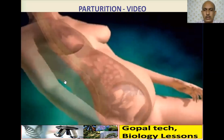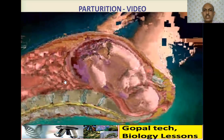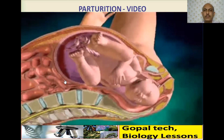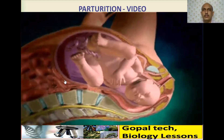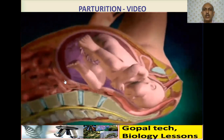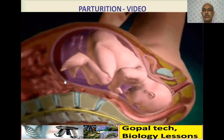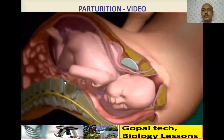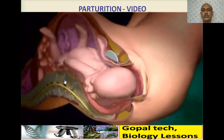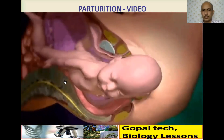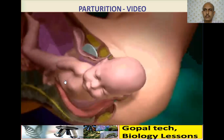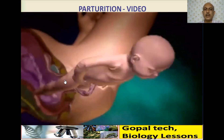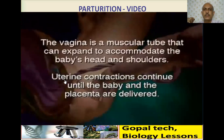During pregnancy, the uterus nurtures and protects the developing fetus during gestation. A full-term pregnancy is approximately 40 weeks. When the fetus has matured and birth is imminent, the baby goes through movements to navigate the birth canal. During labor, the uterus contracts at regular intervals, causing the cervix to dilate — these are labor pains. When the cervix dilates to 10 centimeters, the baby passes from the uterus into the vagina, a muscular tube that expands to accommodate the baby. Contractions continue until the baby and placenta are delivered.